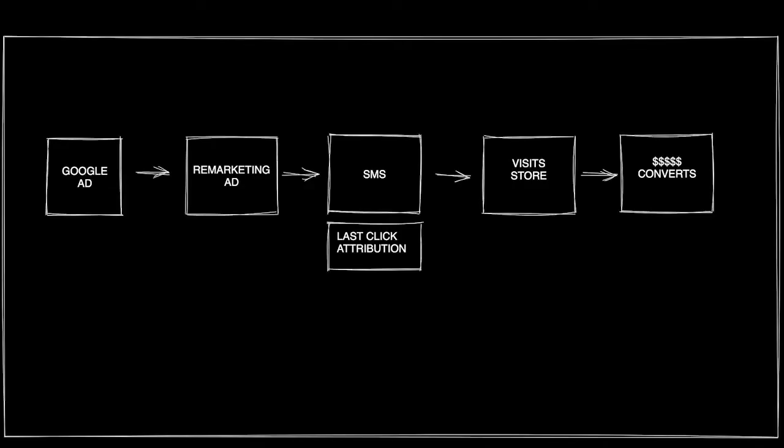Last but not least, when we look at attribution — fundamentally most businesses use last click as the attribution model, which means the last click closest to the conversion gets all the credit. But this concept may be flawed. Think about it: you saw a Google ad, forgot about it, saw a remarketing ad, then on a random day received a text message from the business and decided to make a purchase. Last click would say SMS should get the credit, but actually Google Ads started the whole process.